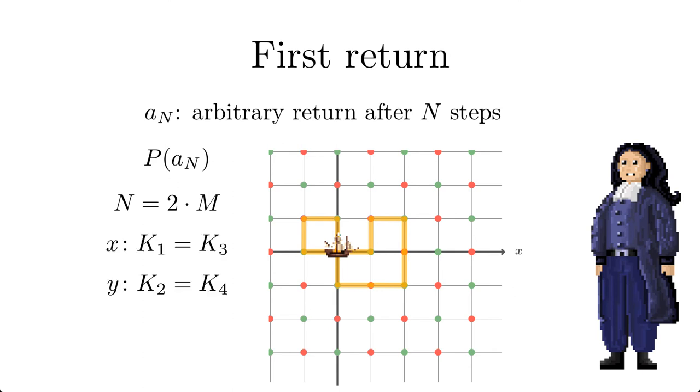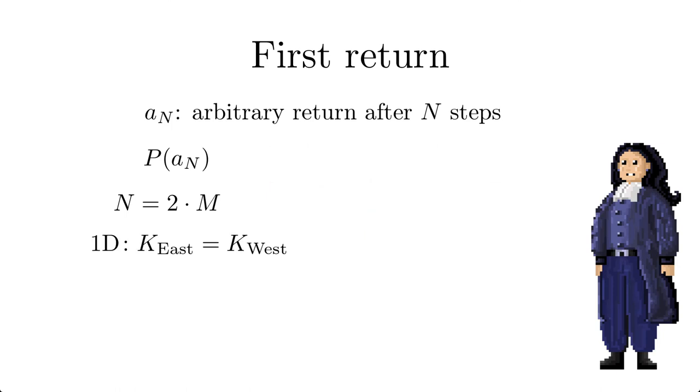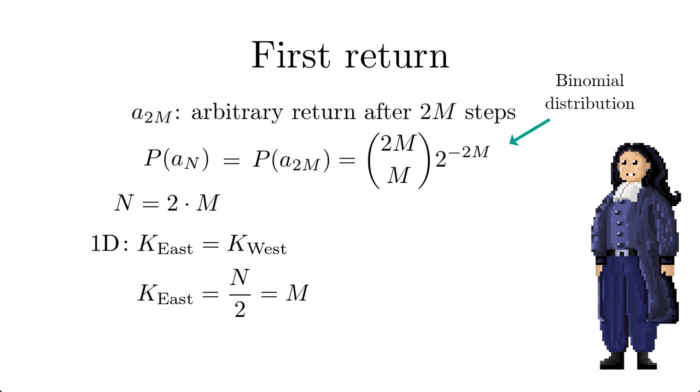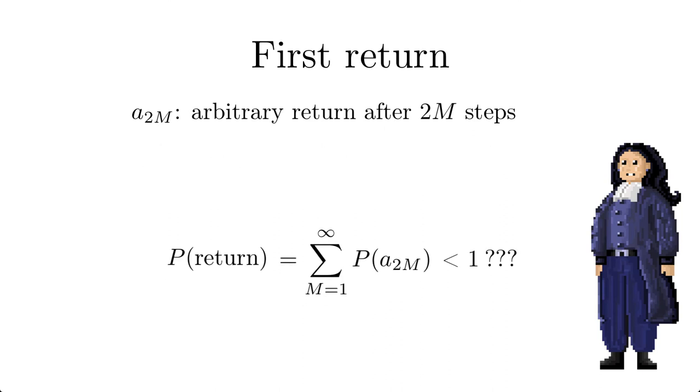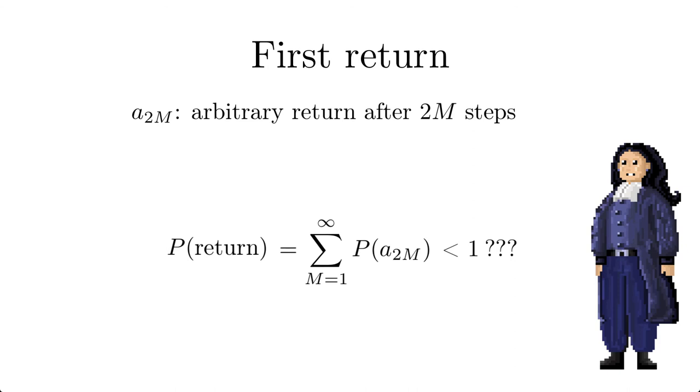The return implies that for each cartesian axis the walker moves forward as often as backward. In 1D the frequency for going east is simply half the number of total steps and the probability given by the binomial distribution. But how does one answer the question whether the walker will ever return home? One could come up with the idea of summing over m from 1 to infinity since this covers all possibilities for a return after an even number of steps. If the sum is less than 1 then the probability that the walker will never return is not zero. But unfortunately the events of arbitrary return are not exclusive since we may double count paths that reach the origin and the sum over m does not have the desired meaning.